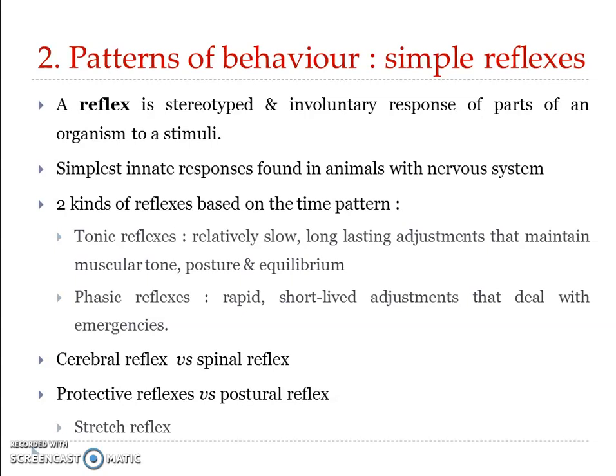Reflexes are found in animals with a nervous system and are often considered the simplest units of behavior. For example, the reflex that causes us to close our eyes when something comes directly toward them — there is no thought process, it is involuntary and fast. Similarly, when dust particles enter the eyes, tears are induced automatically. All those automatic, inborn responses are reflexes. There are two classes of reflexes based on time pattern: tonic reflex and phasic reflex.